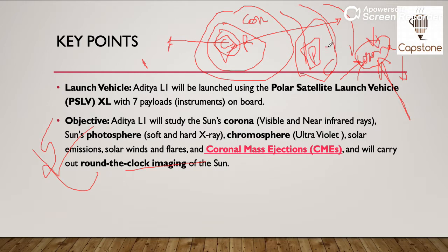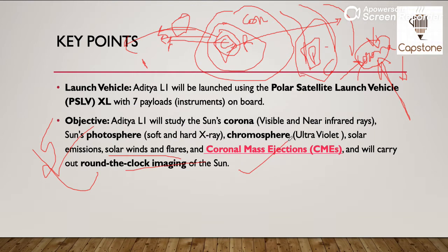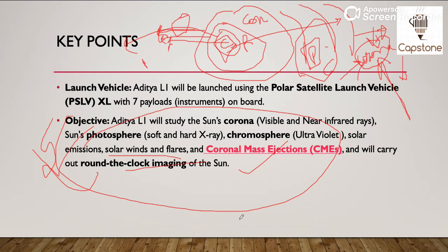Toh sun ke corona ko samajhna — iska ek aspect hua. Aur photosphere, chromosphere inko samajhna — do aspect. Third baat: ab yeh jo sun hai, sun se jab itni zyada nuclear fusion reactions hoti jaati hain, toh yahan se charged particles ke flares nikalte hain, continuously unka emission hota hai, jinhe solar winds kehte hain aur solar flares kehte hain. Aur jab yeh solar winds aur flares chalti hain, tab apne saath saath kaii baar aisa hota hai ki jo bhi object inke surrounding mein aayega, unko bhi apne saath leke chalti hain — toh isko bola jata hai coronal mass ejection, kyunki woh mass ko bhi leke chali hain saath mein.